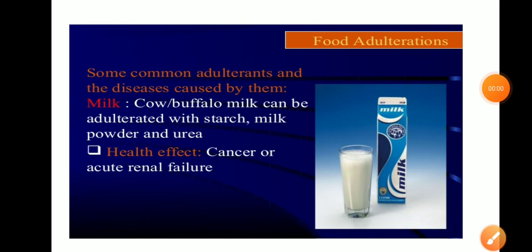Examples of adulterants. In this video, I will tell you about adulterants. Milk — buffalo milk can be adulterated with starch, milk powder, and urea.